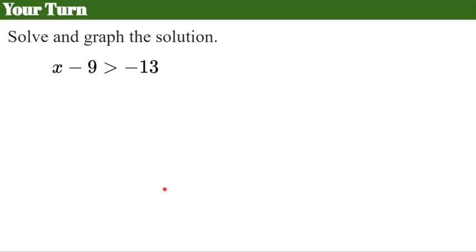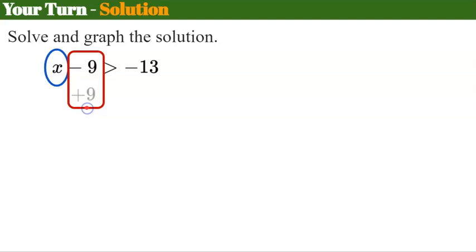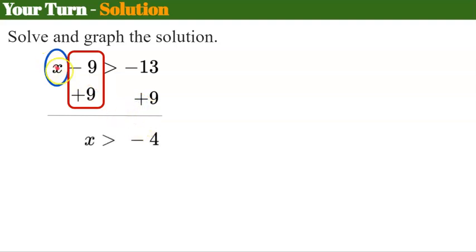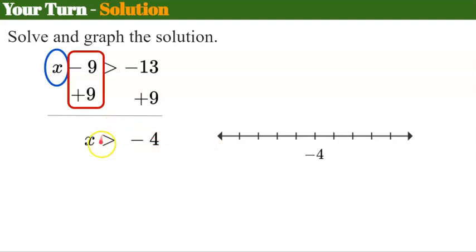Now it's your turn — pause the video, solve and graph your solution set, then come back. Welcome back. We have our variable being subtracted by 9, so to make a zero pair we add 9 to both sides. That leaves x greater than, and negative 13 plus 9 is negative 4. So x is greater than negative 4. On the number line we place negative 4 with an open circle — open because it cannot be equal to — and the arrow goes to the right, because greater than with the variable on the left matches the arrowhead to the inequality symbol.